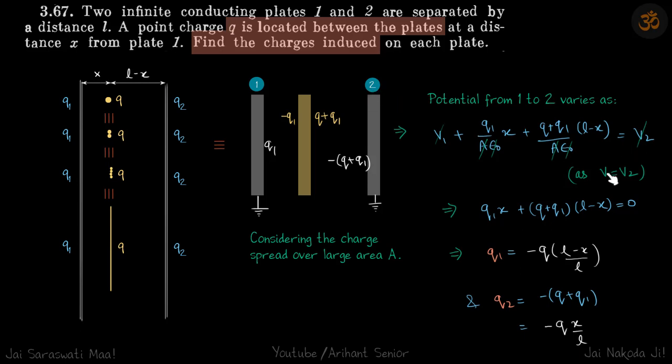And as V1 is equal to V2 we will cancel that and we will be left with our equation Q1 x plus Q plus Q1 into L minus x is equal to 0. Now you can see there is only one variable Q1 in this equation. So we will find that. That will give the charge on the first plate Q1. And charge on the second plate will be negative of Q plus Q1. So if you put the value of Q1 here you will get Q2 as well.